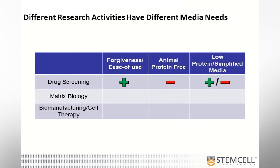I wanted to generically go through a couple of different research activities that some of you might be involved in. These are just generic, and individual circumstances will vary depending on what you're doing. For example, if you're doing drug screening applications, growing up a lot of cells easily without any problems is probably important, so forgiveness and ease of use is important. At early stage drug screening, animal protein free is probably not important because you're not as interested in the source of the components at this early stage.